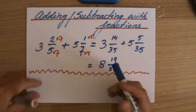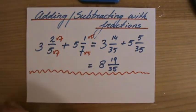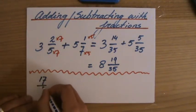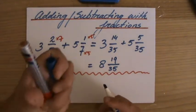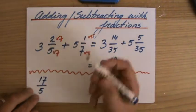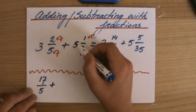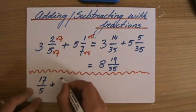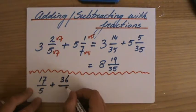So three, two over five as an improper fraction, top-heavy fraction, is seventeen over five. Check my previous video how to do that. Three times five plus two. And the other one also as an improper fraction, five times seven, thirty-five plus one. So that is thirty-six over seven.